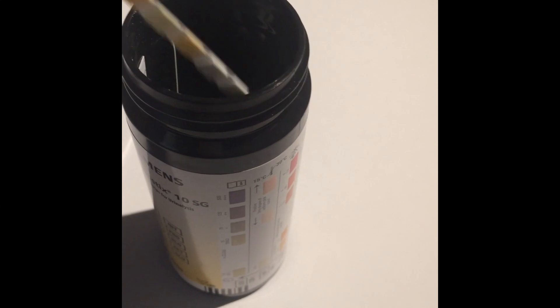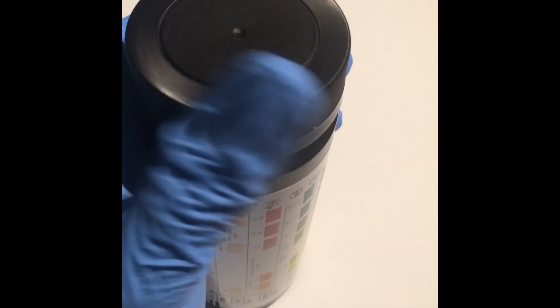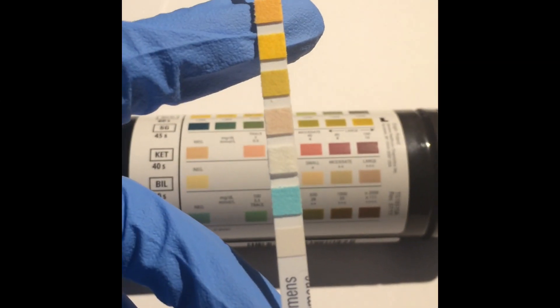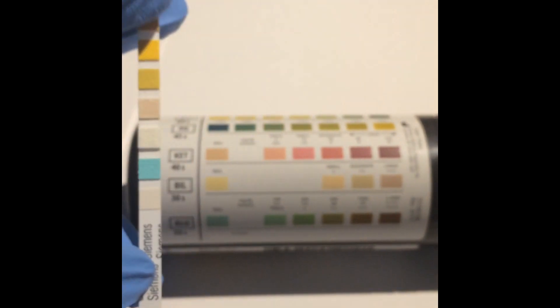Here is the dipstick. I'll go through with you how to interpret the results first. The first white square is simply a color comparison.